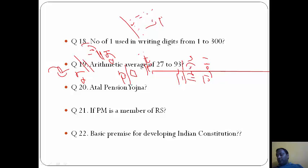Atal Pension Yojana - the beneficiary must be in age group of 18 to 40 years, beneficiary will receive pension only after age of 60 years, and after death of beneficiary his spouse continues to receive pension. Answer is C. If PM is a member of Rajya Sabha, answer is D, he will not be able to vote in his favor in the event of no confidence motion, because no confidence motion always happens in Lok Sabha and since he is member of Rajya Sabha he cannot vote in Lok Sabha. Question 22: which is the basic premise for developing Indian Constitution? Answer is A, Government of India Act 1935.